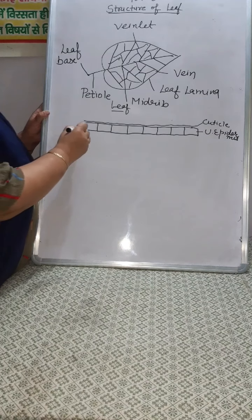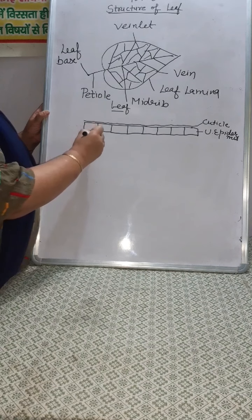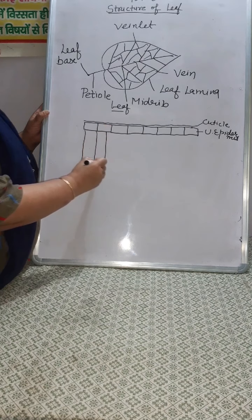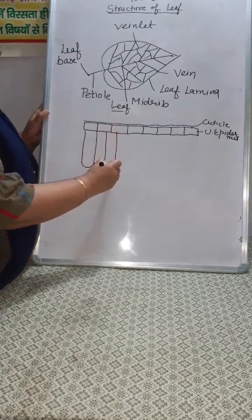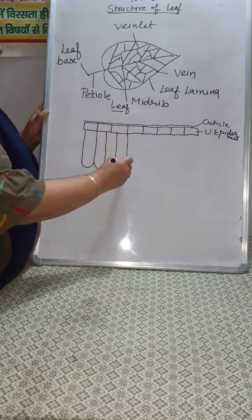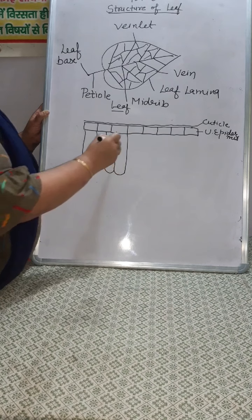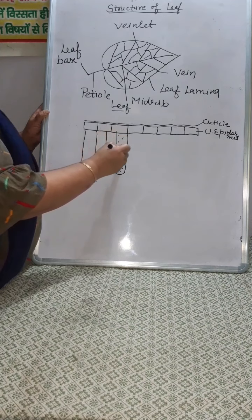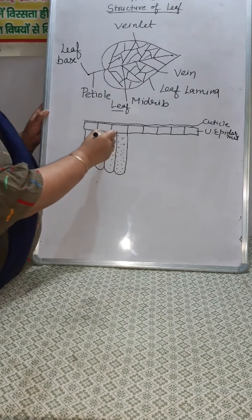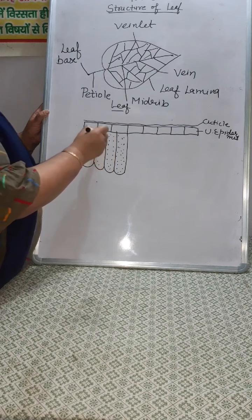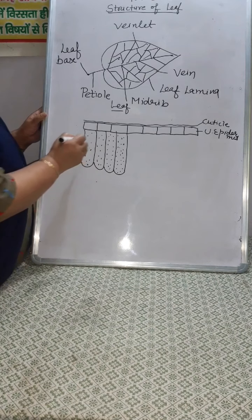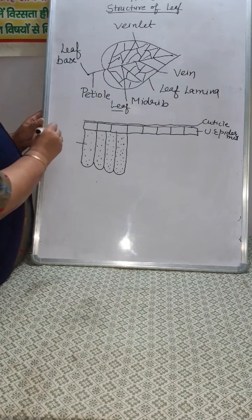Below the upper epidermis are present cells. You have studied in 9th class about parenchyma. These are also parenchyma cells — they are compactly arranged cells and contain a large amount of chlorophyll. These compactly arranged cells containing large amounts of chlorophyll are called palisade parenchyma.